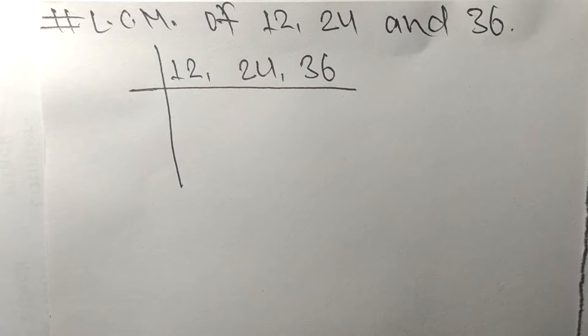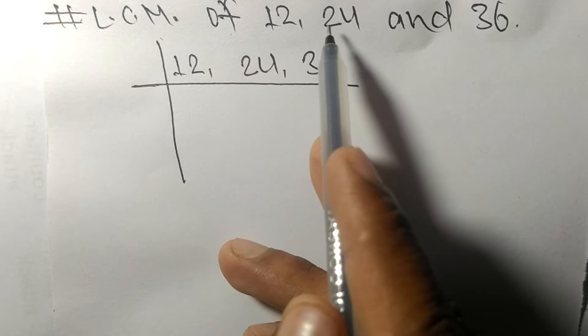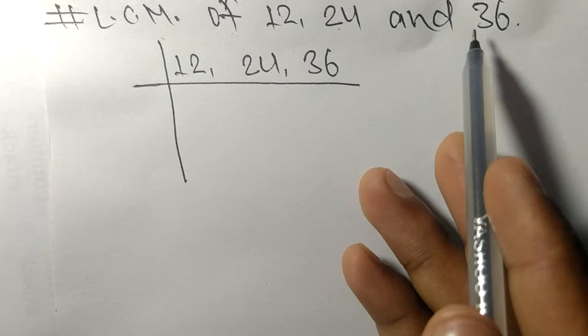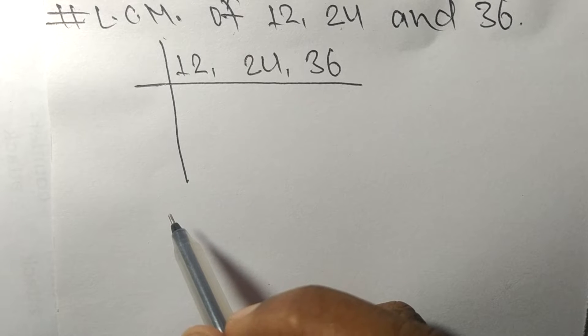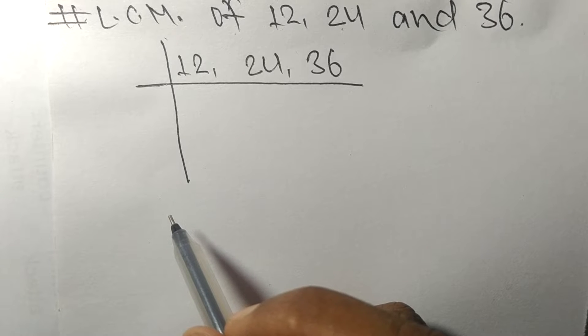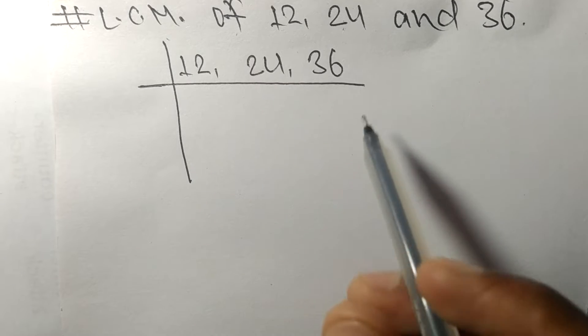So today in this video we shall learn to find the LCM of 12, 24 and 36. To find the LCM we have to choose the lowest number that can exactly divide at least any two of these numbers.